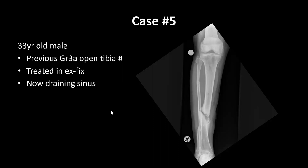Case 4: A 33-year-old male with a previous Grade 3A open tibia treated in an external fixator, now presenting with a draining sinus — Type A host. A trainee identifies this as a fracture-related infection with confirmatory criteria, noting on the AP x-ray of the tibia and fibula a non-united fracture at the mid-shaft proximal two-thirds/distal third junction, with a united fibular fracture and signs of soft tissue infection around the site.